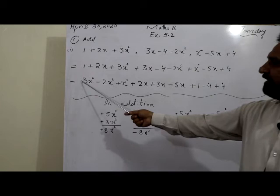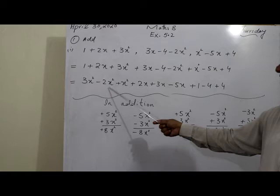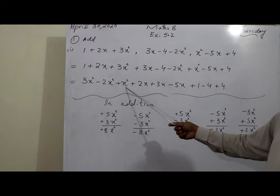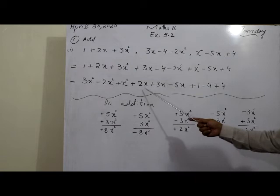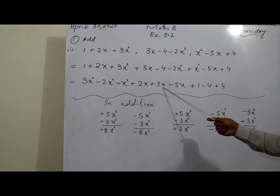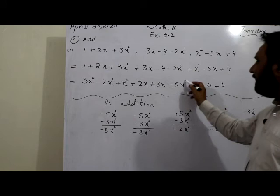Looking at x² terms: positive 3, minus 2 — different signs, subtract: 3 minus 2 equals 1x². Then this 1x² and the other 1x² are both positive, so they add to give 2x². Next, the x terms: positive 2x and positive 3x add to give 5x; then minus 5x cancels the 5x — they cancel out to zero.